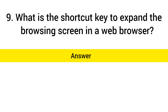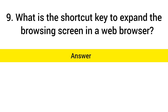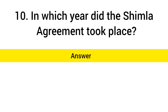What is the shortcut key to expand the browsing screen in a web browser? Answer: F11. In which year did the Shimla Agreement take place? Answer: 1972.